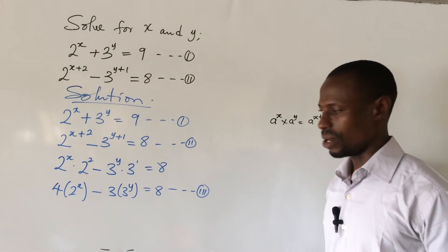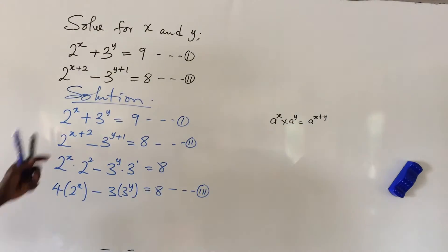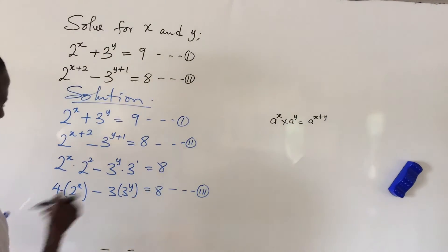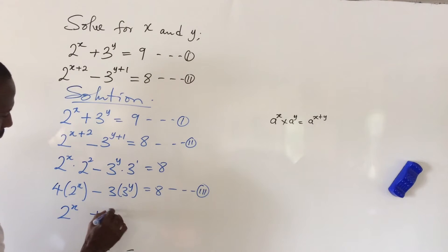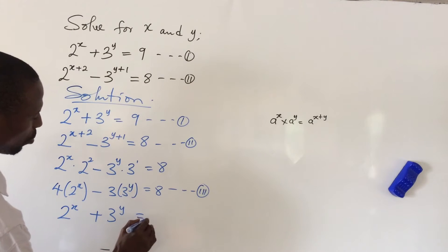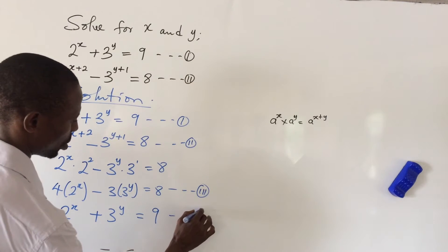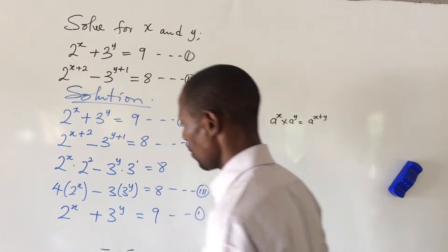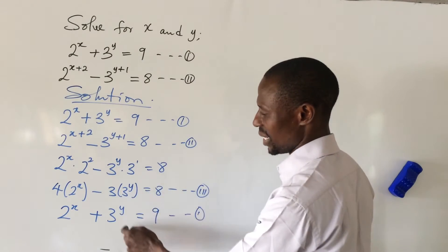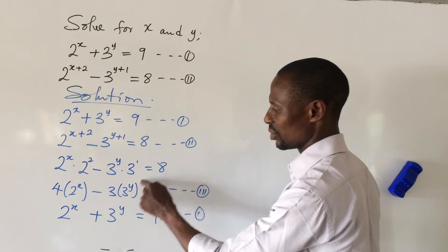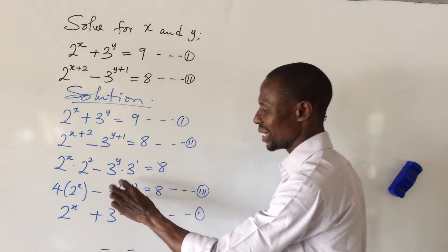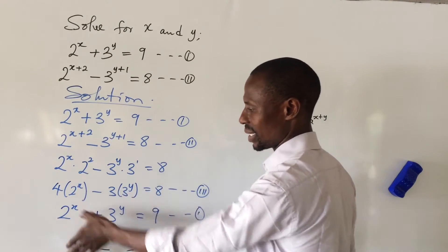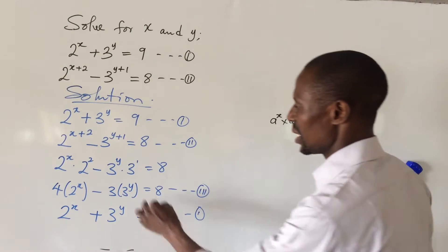So we can now solve equation three and equation one simultaneously. Let's bring equation one and equation three together into the system. This gives us equation one: 2 to the power of x plus 3 to the power of y equals 9. Now we want to solve this simultaneously and we need to eliminate either 3 to the power of y or 2 to the power of x.